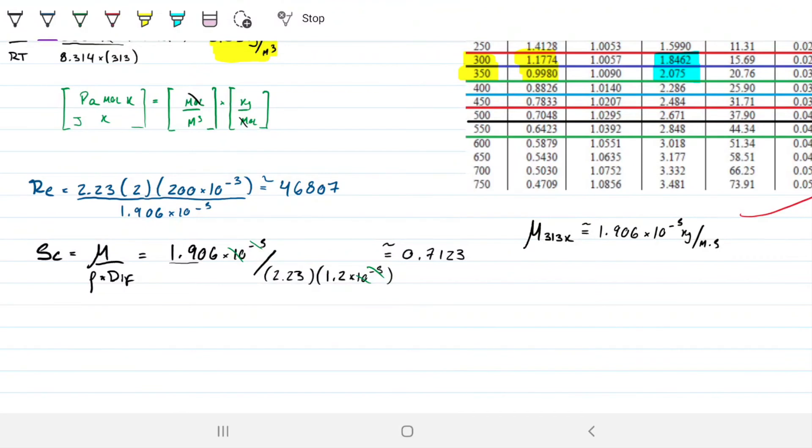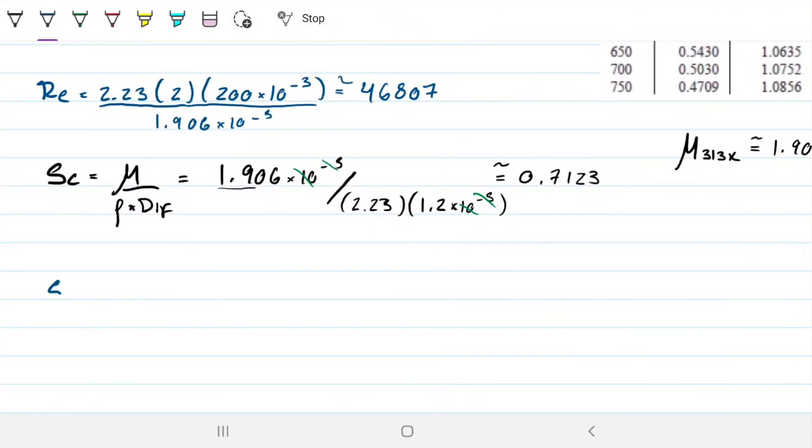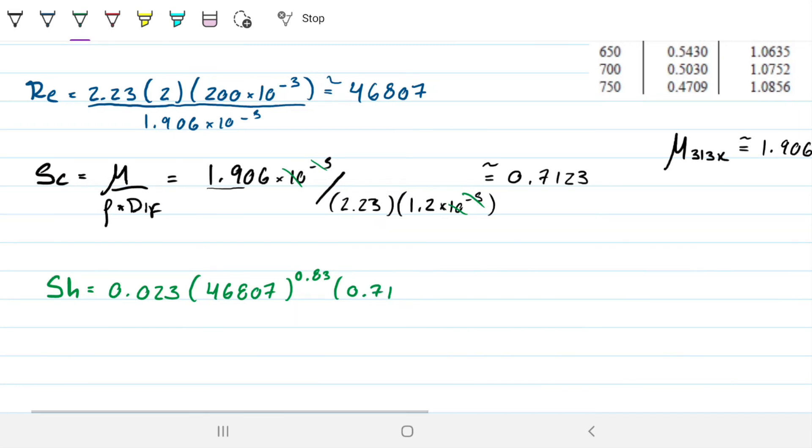Now, as simple as that, we can finish it off by calculating Sherwood and then finding K. My Sherwood is given by the correlation of 0.023, Reynolds 46,807 to the 0.83 times my Schmidt number, which is approximately 0.7123 to the 0.44. This gave me about 149.